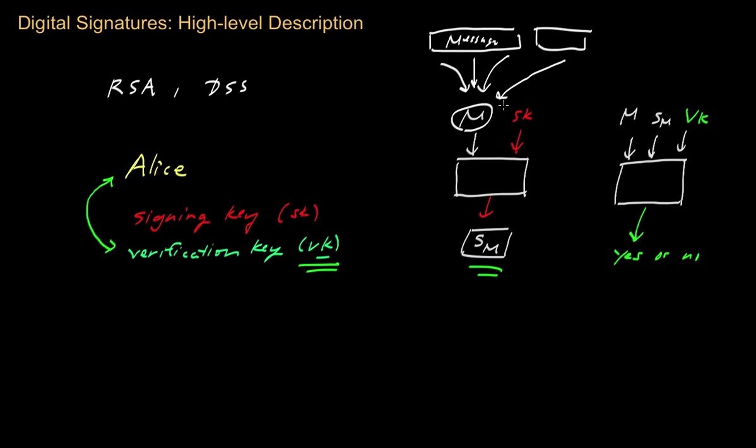If you could find two distinct input messages that map to the same output under the hash function, that would lead to problems: a signature on the first message would be identical to a signature on the second message, since what you're signing is the hash of the message. If the hashes are identical, you'd end up with identical signatures on two different messages, potentially making it easy for a particular message to be forged — which is obviously something you don't want.